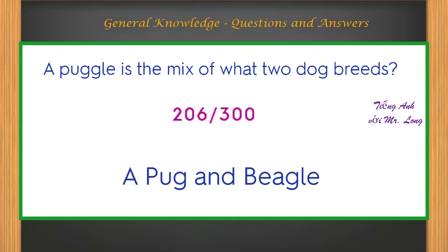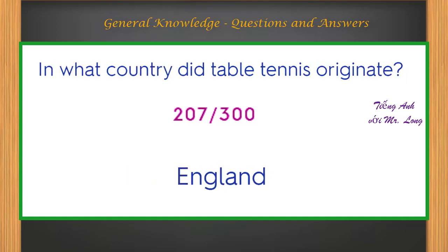A puggle is the mix of what two dog breeds? A pug and beagle. In what country did table tennis originate? England.